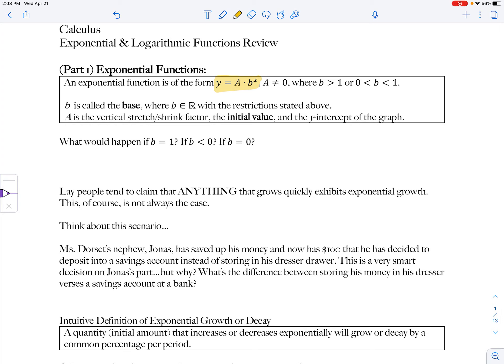Now, why do we have these restrictions on the base b? Well, let's consider what would happen if b were equal to one, less than zero, or equal to zero. So if our base were equal to one, that would be one raised to the x power, and we think about plugging in real numbers, well, one raised to any real number power would just be one. So that would actually just represent a horizontal line.